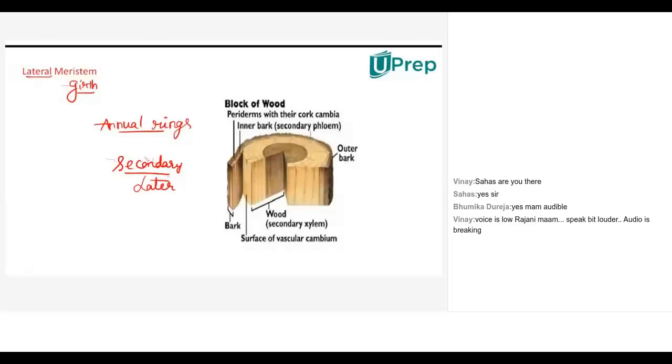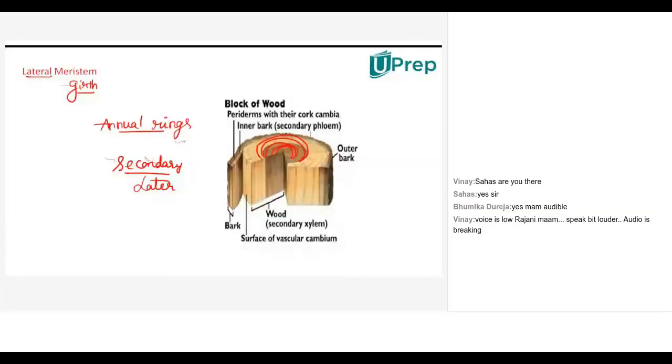Lateral meristem is a secondary meristem. If you see here in this picture, we will find various annual rings, rings for them. Those are the lateral meristems which developed in years. So the number of annual rings will refer to the age of the plant.